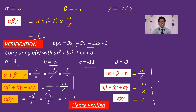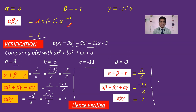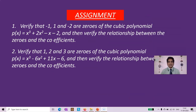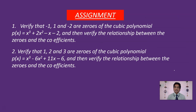We have verified the relation between the zeros and coefficients of this cubic polynomial. This is an important problem from an examination point of view. There are two problems given as assignment — follow the same procedure: first verify the three values are zeros, then verify the relationship. Practice this well. In the next tutorial, we will go to the exercise part. Thank you, have a good day.